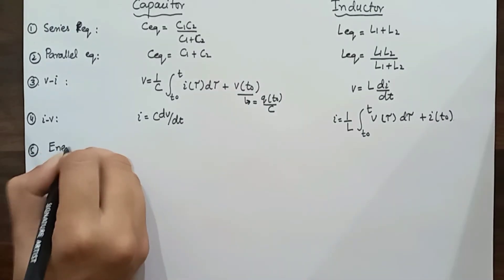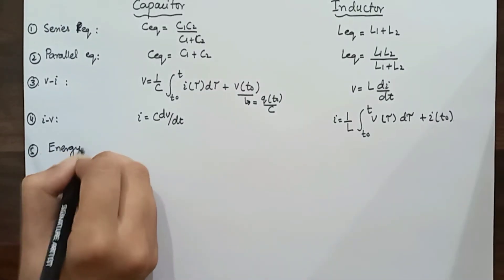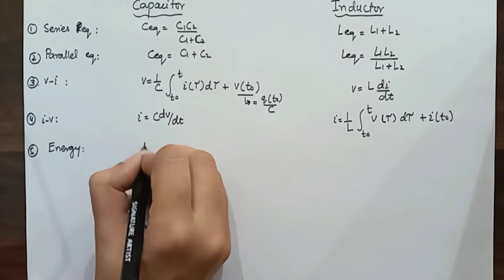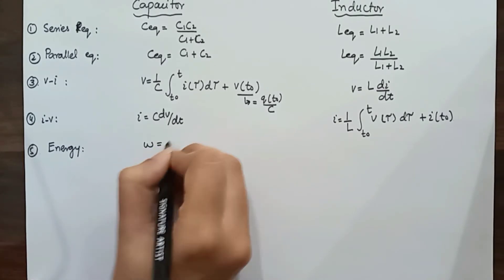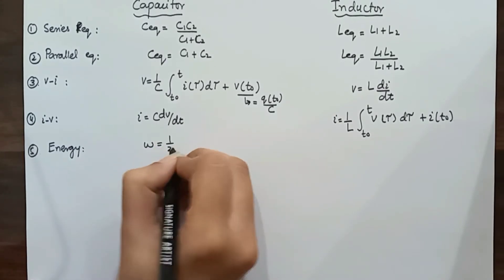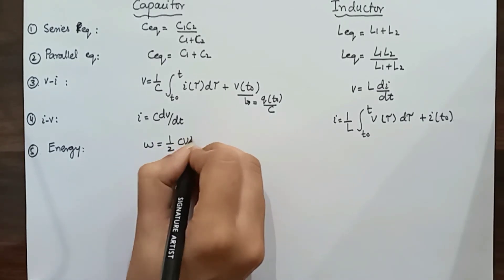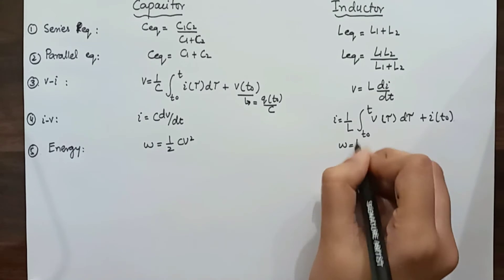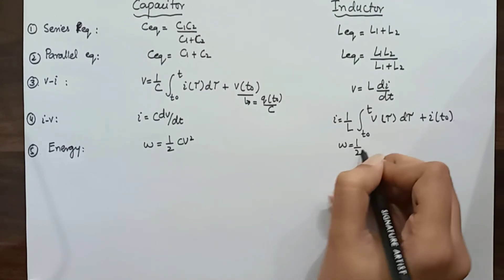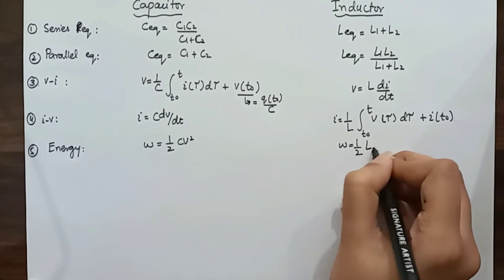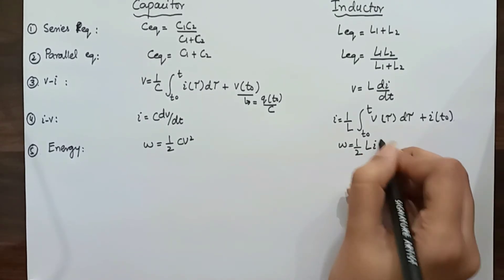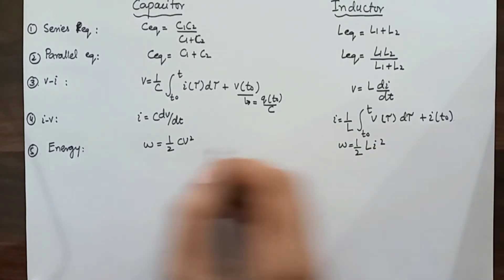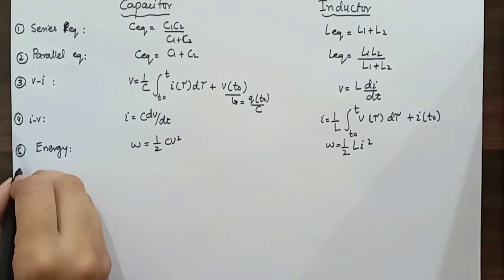The next parameter is the energy stored in a capacitor or inductor. For a capacitor, energy = (1/2) × C × V². For an inductor, energy = (1/2) × L × I², the square of the current.